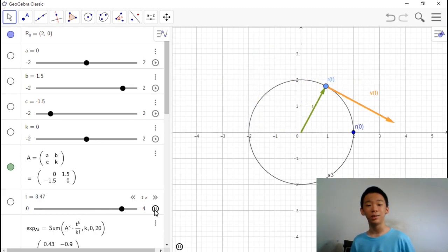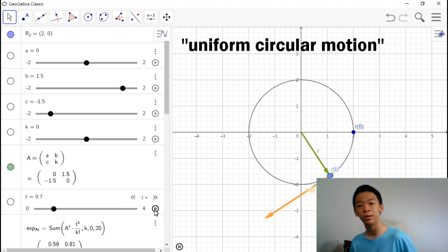In physics, this type of motion is called uniform circular motion, and I've talked about it in my last episode.